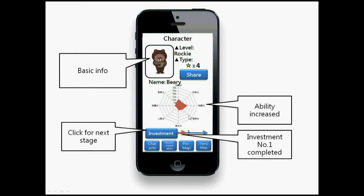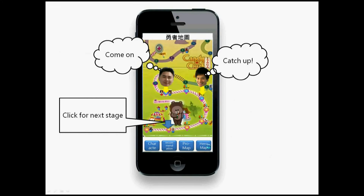As you can see, in the investment area you have already finished level one, stage one, and you can proceed to stage two or share this accomplishment with friends. In the hero map, we use a concept like Candy Crush — you can see what stage you are at in the investment area, and there are other players you can try to catch up with.